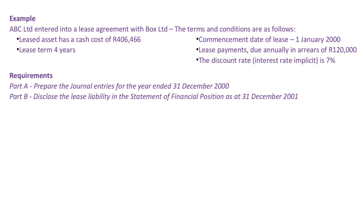As you can see, the question has spelt out the key components for us. In terms of attempting part A, before you provide the journal entries, you would need to do your workings. Your lease asset has a cash cost of $406,466 — that will be your present value. Your lease term will be four years. Because lease payments are due annually, your period of compounding will also occur annually. The commencement date is 1 January 2000, and the effective interest rate you will use in your amortization table will be 7%.